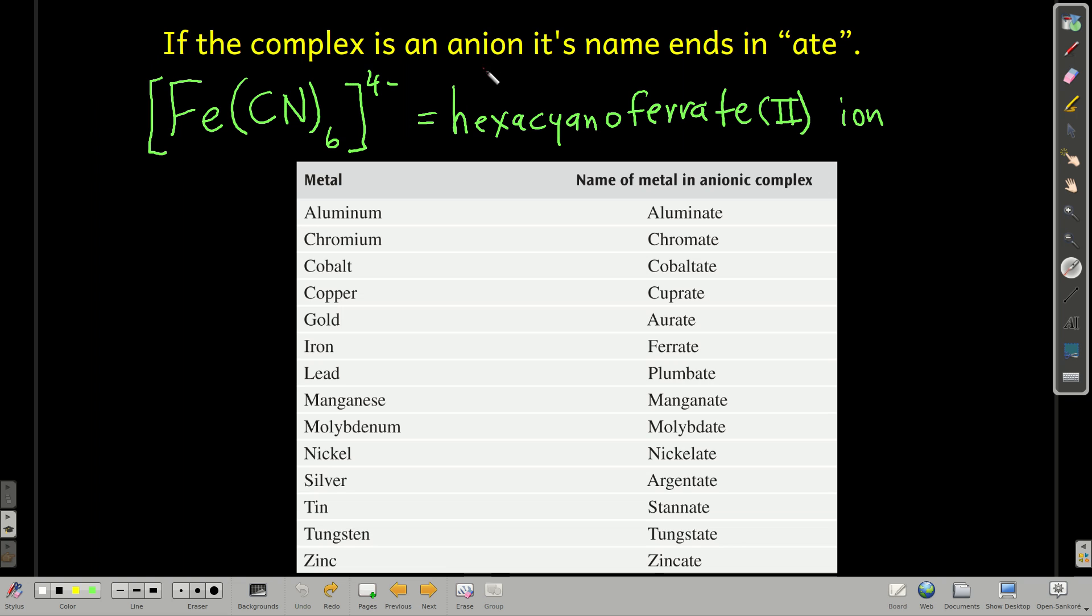If the complex ion is an anion, then its name is going to end in A-T-E. So here, this would be called hexacyanoferrate(II). The Roman numeral 2, because there are six negative charges from the cyanides, overall four negative charges, that means there must be a plus two on the iron.